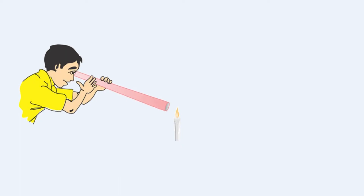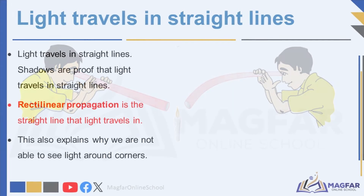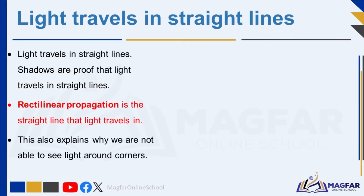Looking at the flame of a candle through a straight pipe or hose, one can observe the light passing through the pipe. However, when attempting to view the light through a bent pipe or hose, the light from the candle fails to reach the eyes. This simple experiment illustrates a fundamental property of light — its tendency to travel in a straight line. This phenomenon is known as the rectilinear propagation of light.